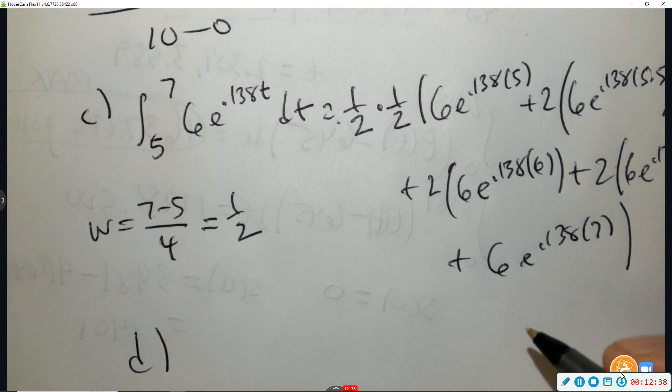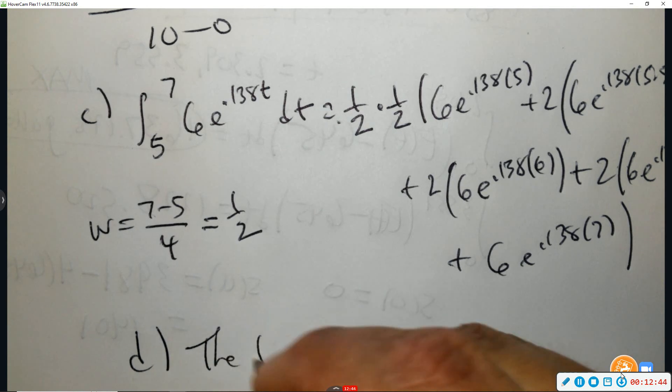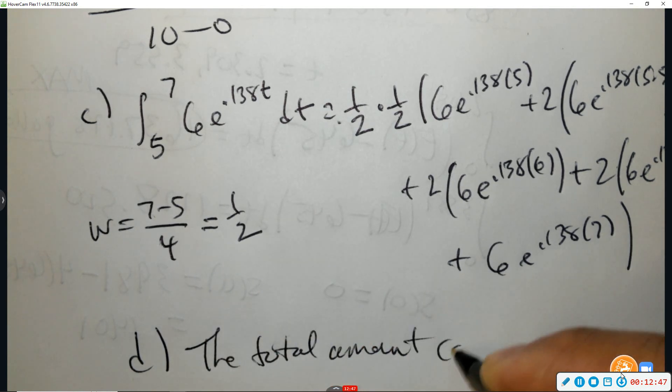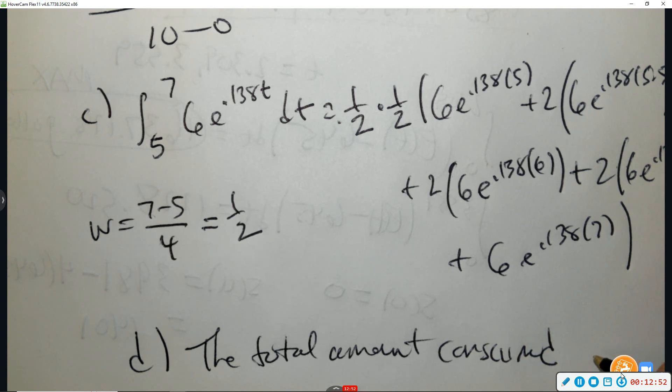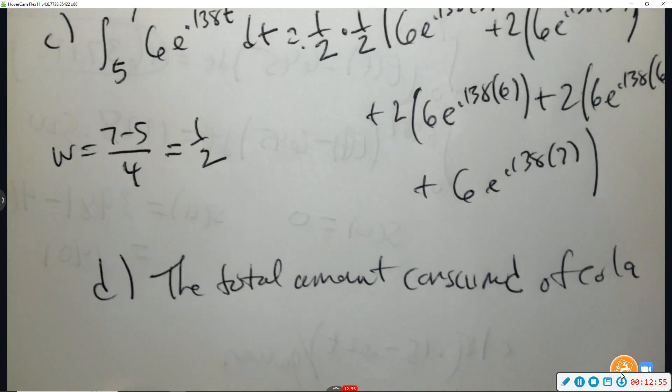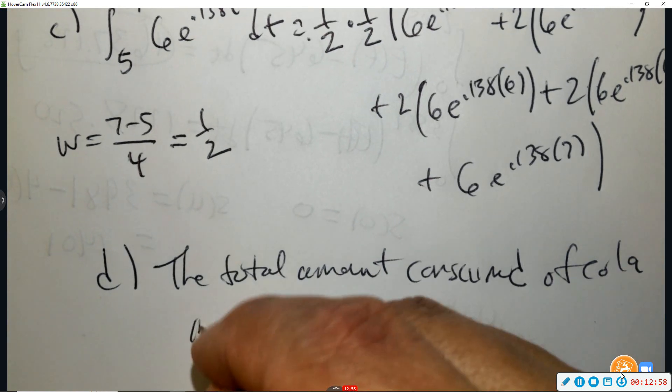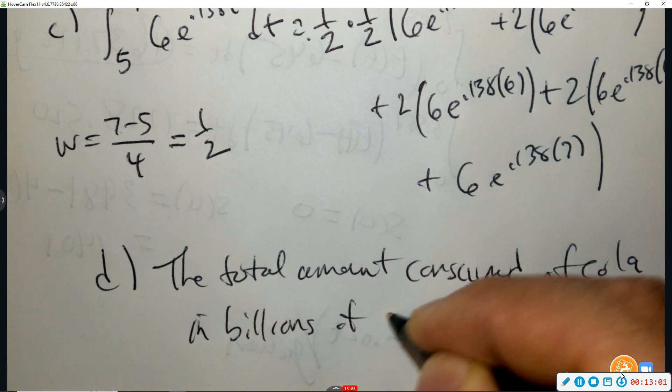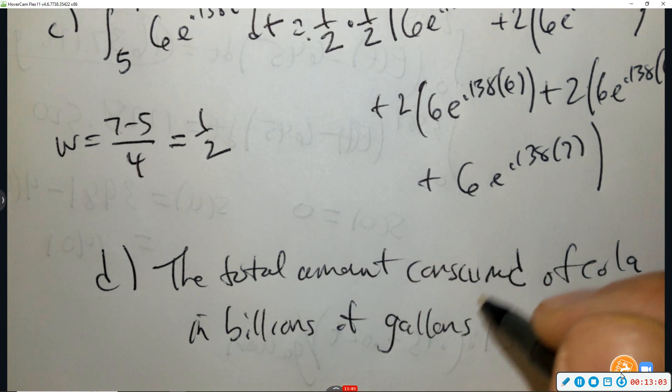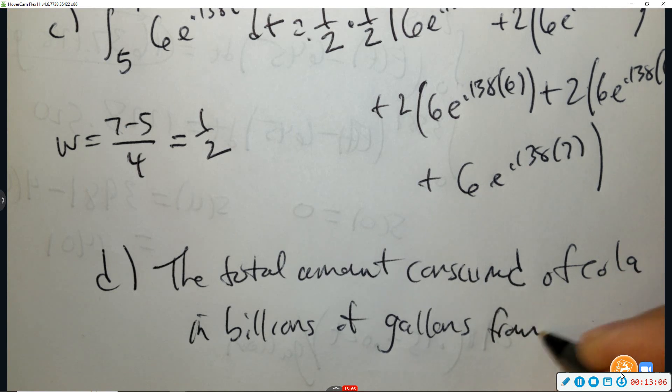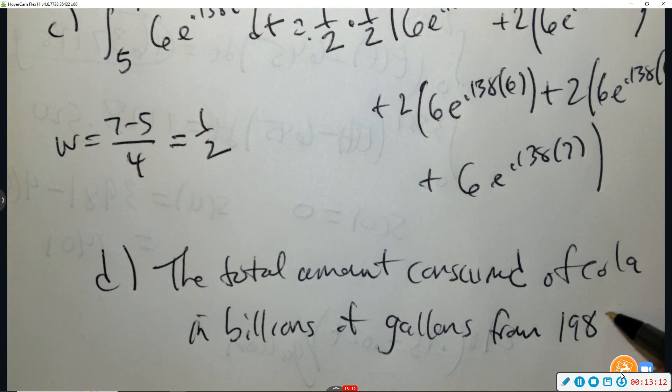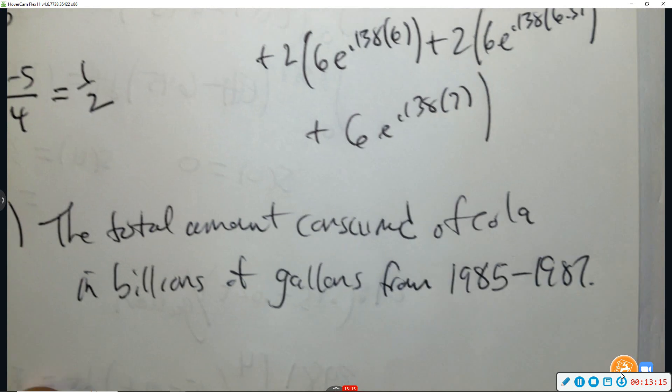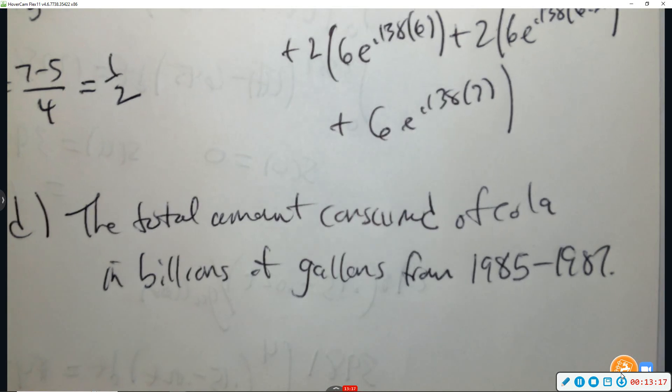D, using correct units, explain the meaning of that in terms of cola consumption. So it's the total amount consumed of cola in billions of gallons from what year to what year? So if it started in 1980, that would be 85 to 87. Done. All right, number 3 is done.